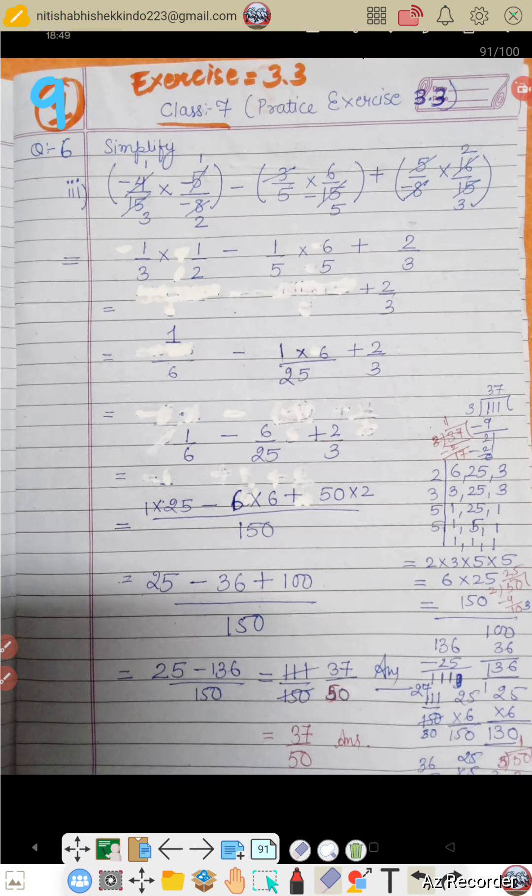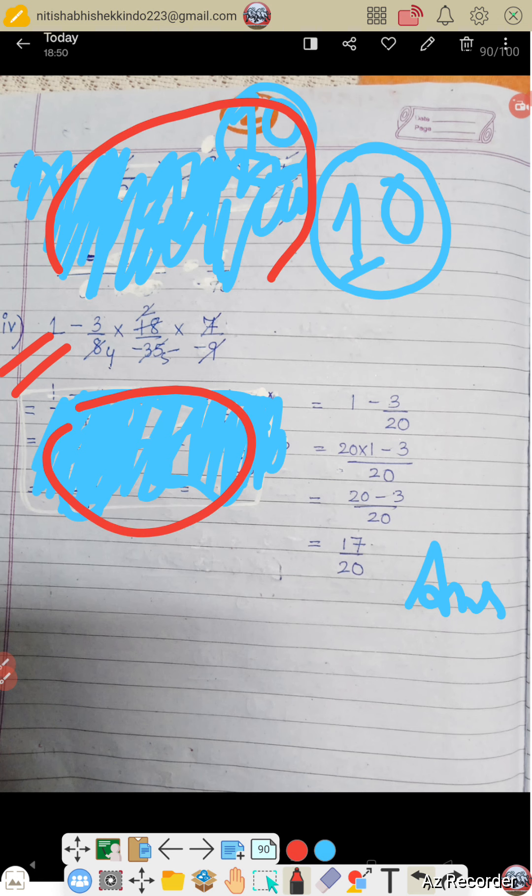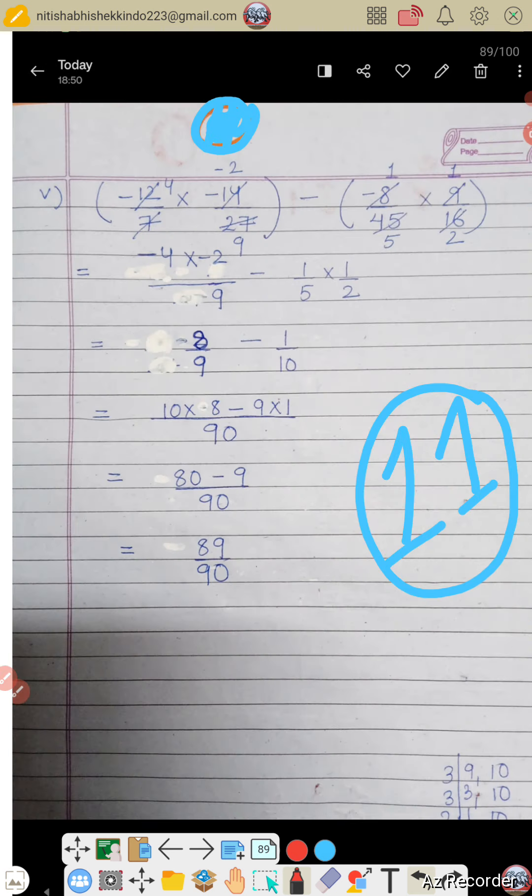Then, chhoor gaya hai question number 6. Question number 6. I give you 3 number, 4 number. Then 5 number. I have not mentioned 6.